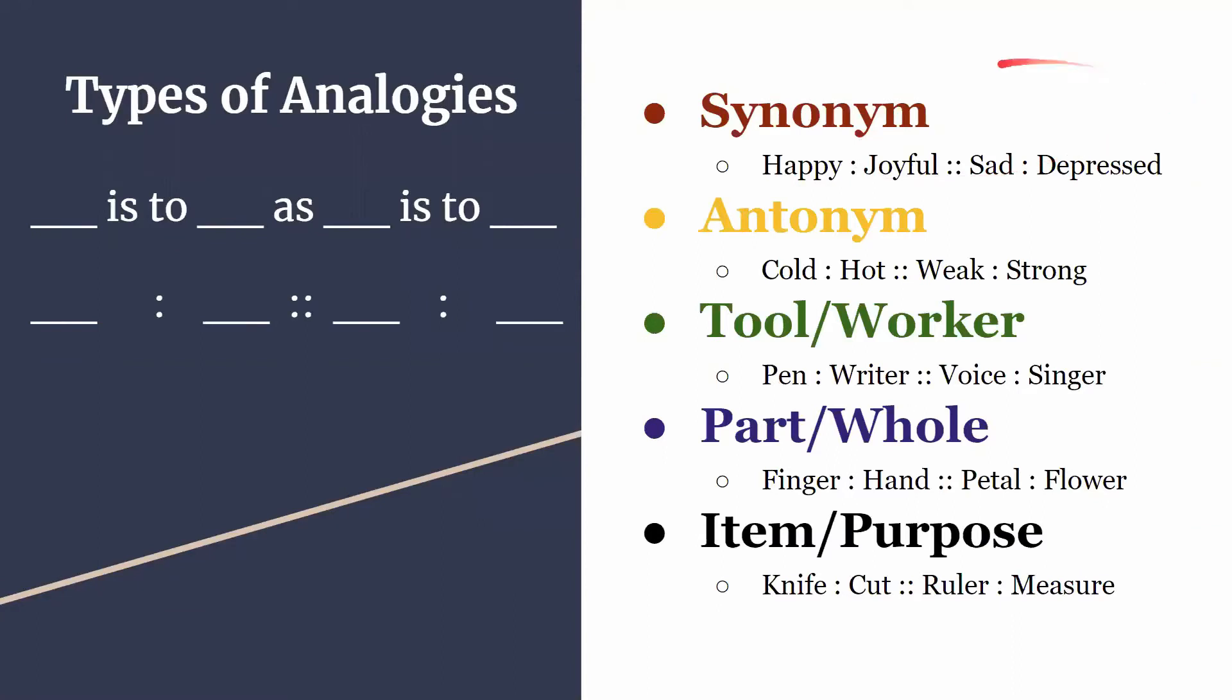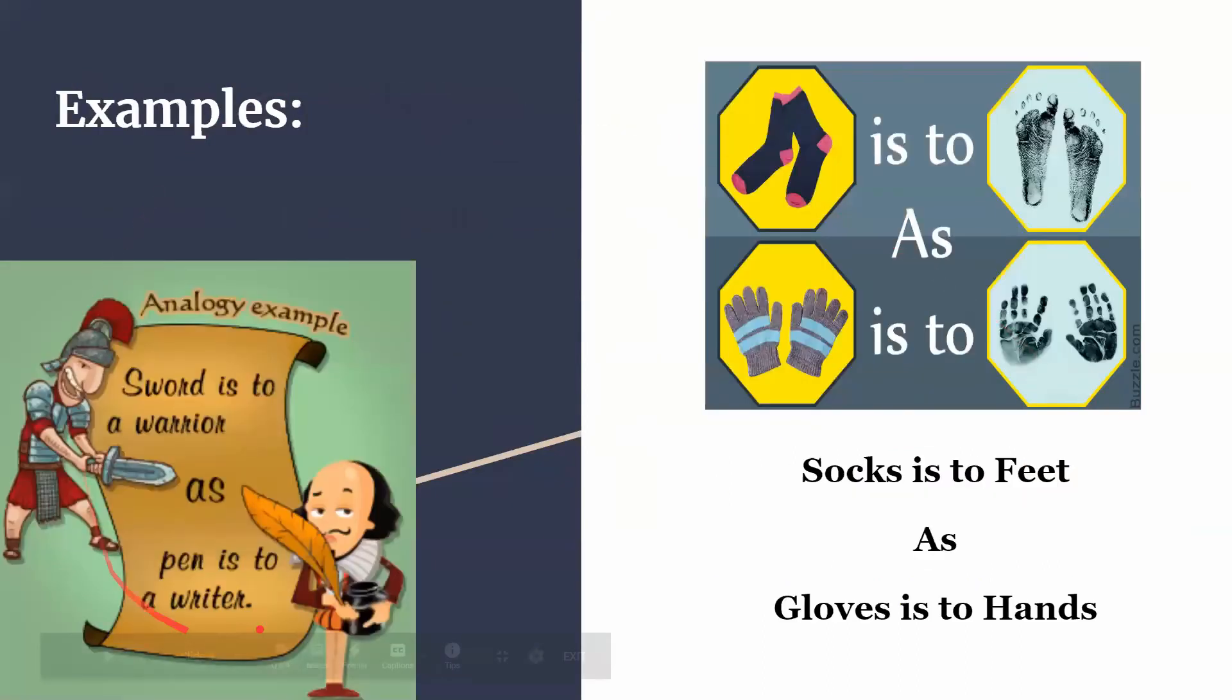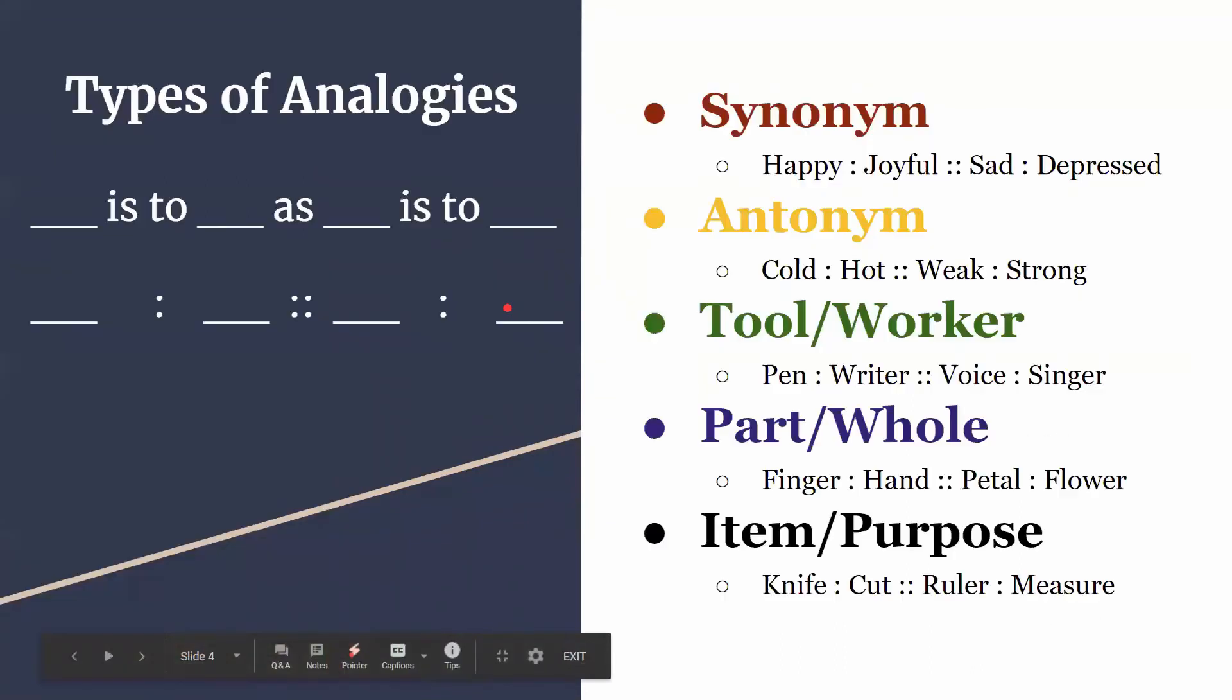For antonym, cold is to hot as weak is to strong. Cold and hot are opposites, and weak and strong are opposites. Now we have tool and worker. Pen is to writer as voice is to singer. It's just like the other example - this would be the tool and worker one.